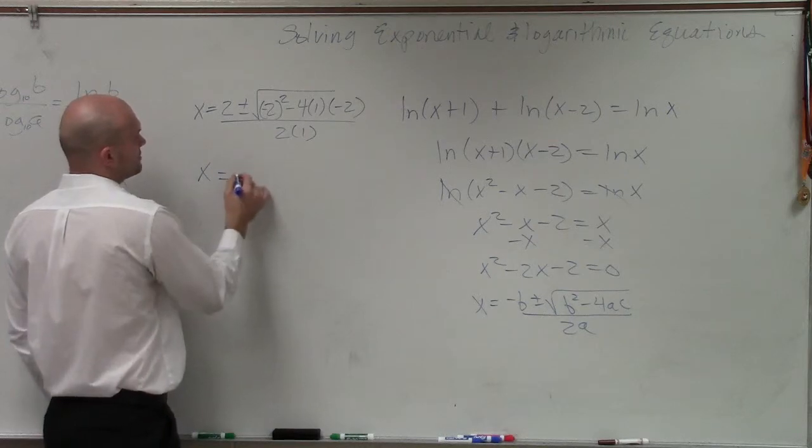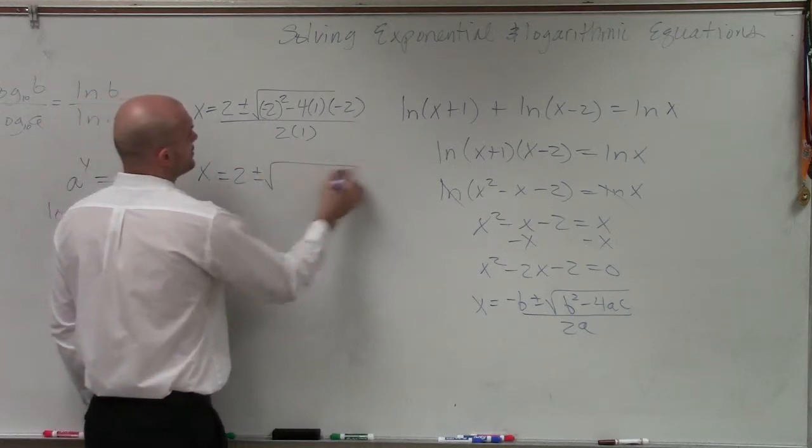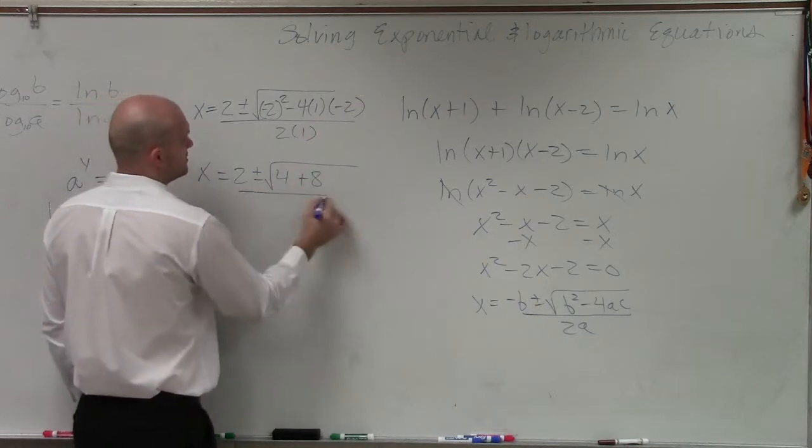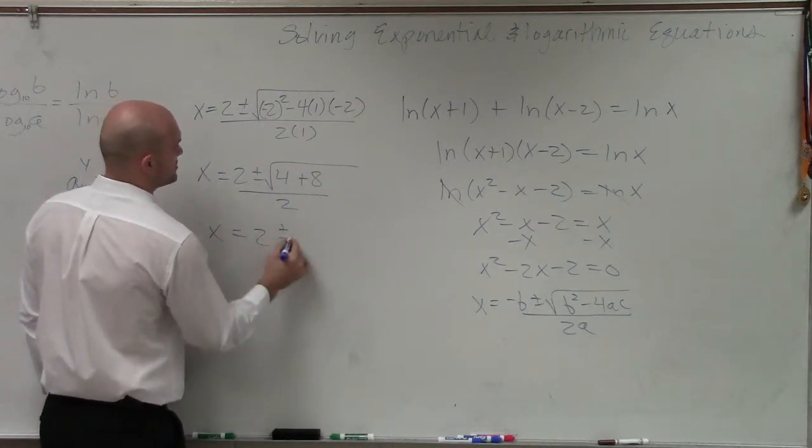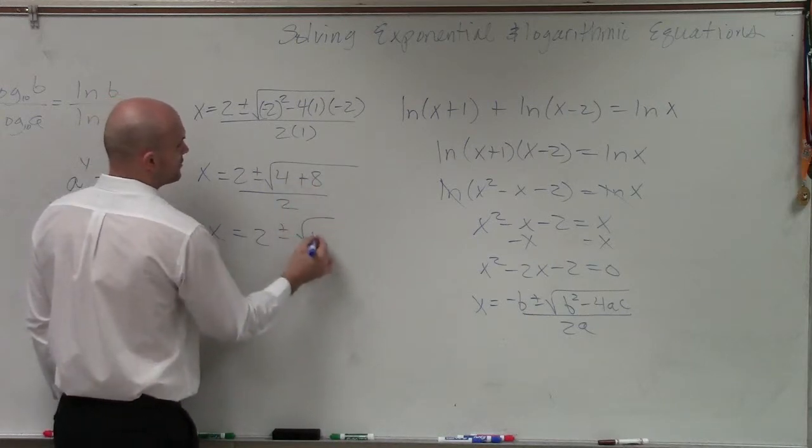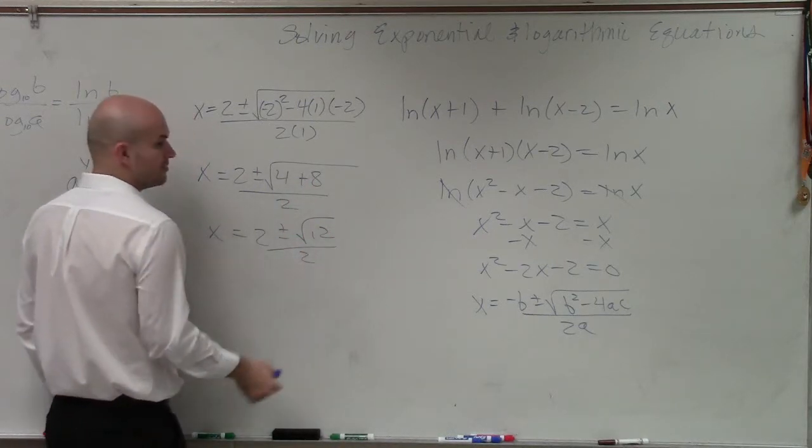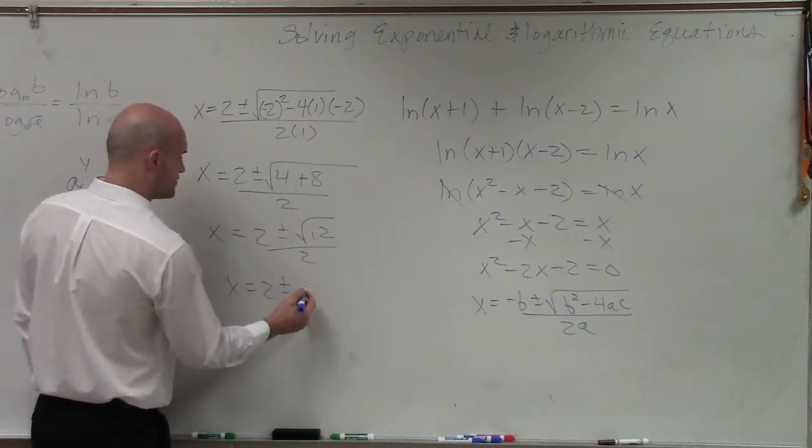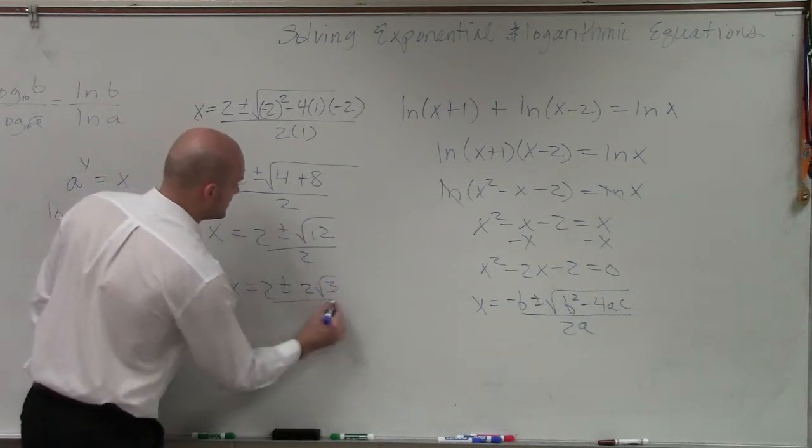x equals 2 plus or minus the square root of 4 plus 8 divided by 2. x equals 2 plus or minus the square root of 12 divided by 2. x equals 2 plus or minus 2√3 divided by 2.